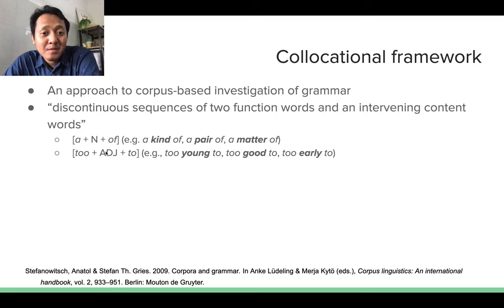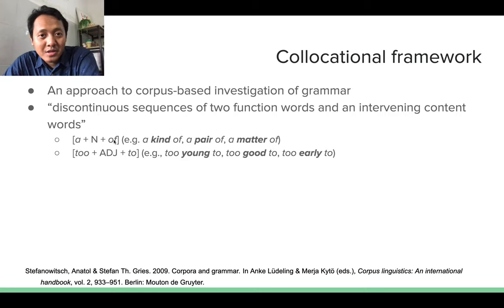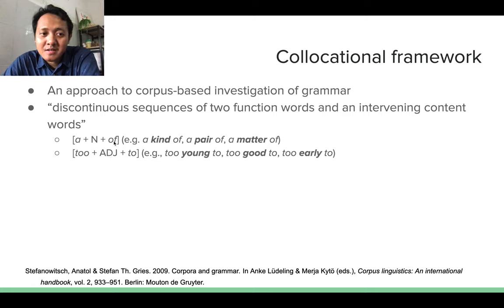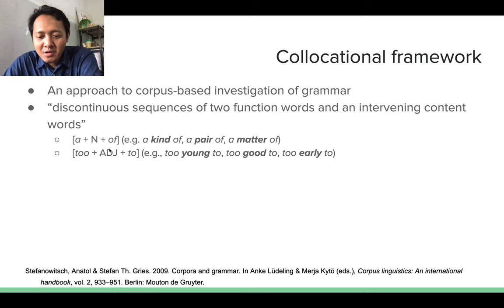These are two examples I took from a chapter by Anatoly Stefanovic and Stefan Gries. These are collocational frameworks because you have sequences of words—uninterrupted or discontinuous sequences—that have two function words and one intervening content word. The content words are not specified lexically; they are given only their part of speech category, their word class. By looking at just this schema or pattern, you can insert any noun into this slot by rule.